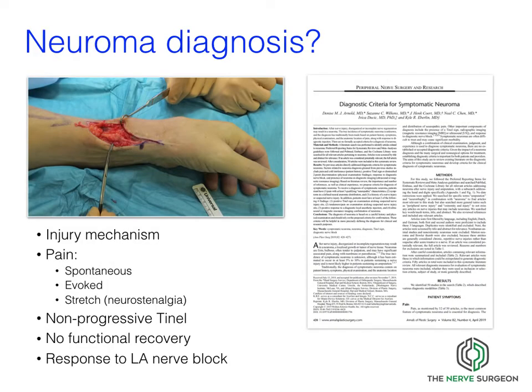How do we diagnose a neuroma? This isn't simple. We can have a suspicion when there's been an injury mechanism. There is pain that is both spontaneous and evoked, and sometimes a tether pain or neurostinalgia when stretching passively against a neuroma stuck in scar. Usually there's no functional recovery in a non-progressive Tinel's sign, elicited by tapping over the site of potential injury. The patient reports unpleasant sensory symptoms into the cutaneous territory of that nerve, and finally a response to a local anaesthetic block. I don't find ultrasound particularly useful to look for a neuroma, but occasionally following a nerve block I will use ultrasound to ascertain if there's a tether point.